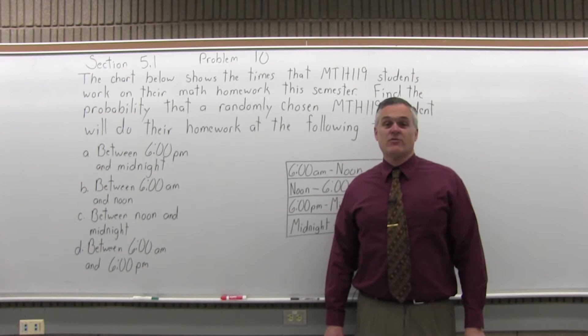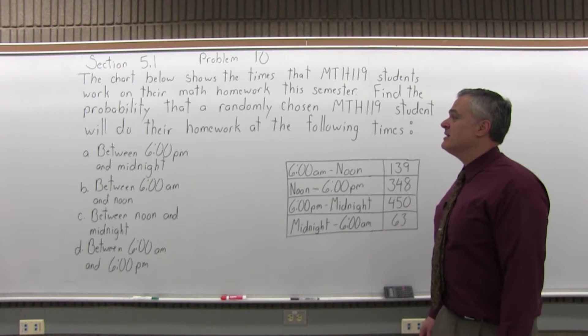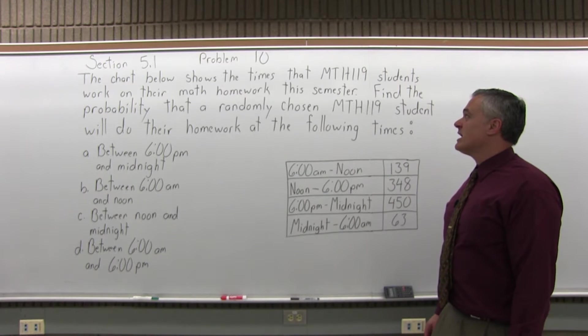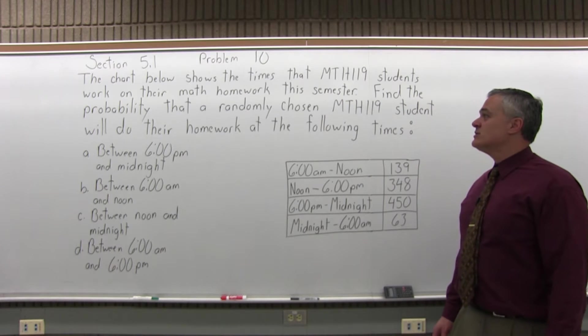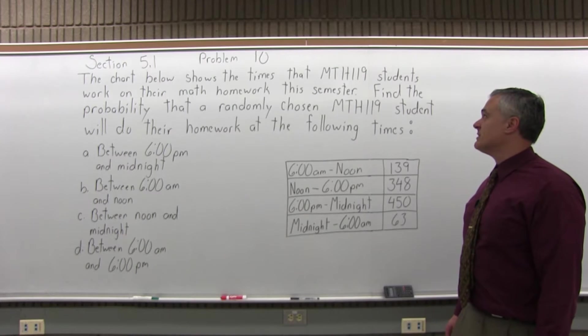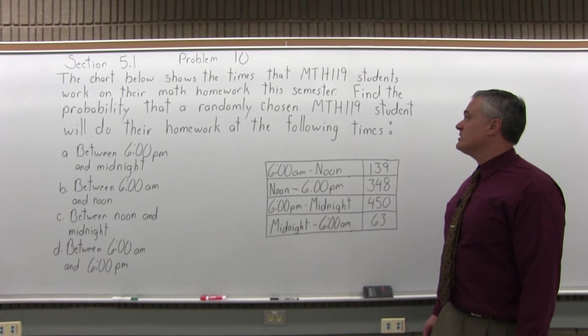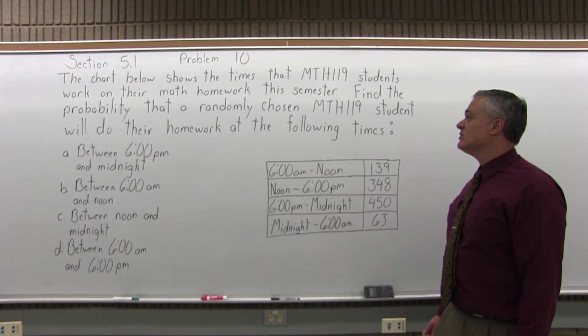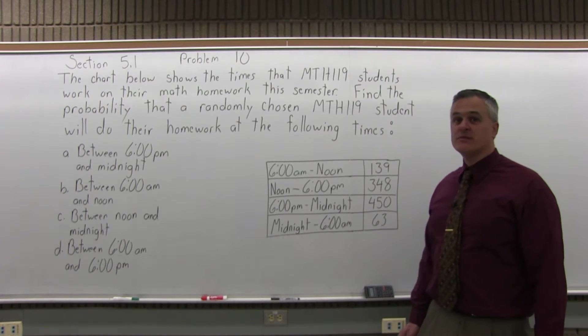This is Section 5.1, Problem number 10. It says the chart below shows the times that Math 119 students work on their math homework this semester. Find the probability that a randomly chosen Math 119 student will do their homework at the following times.